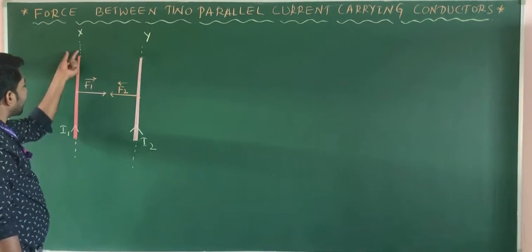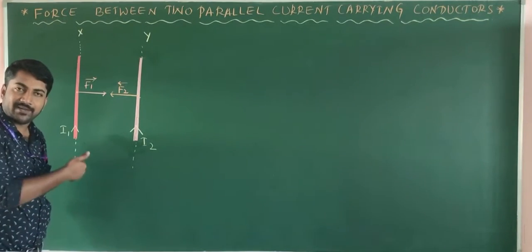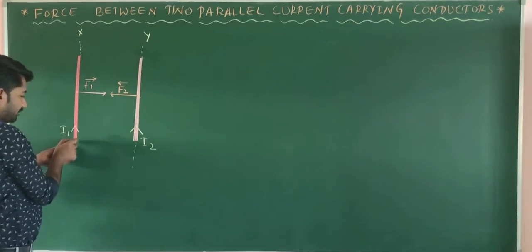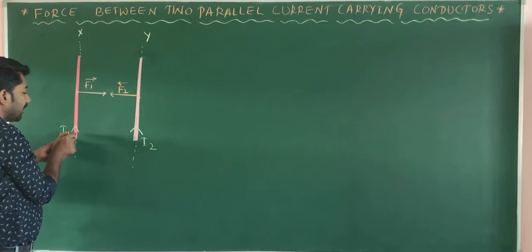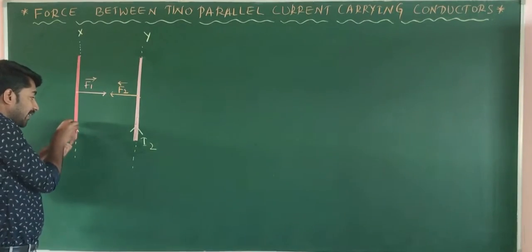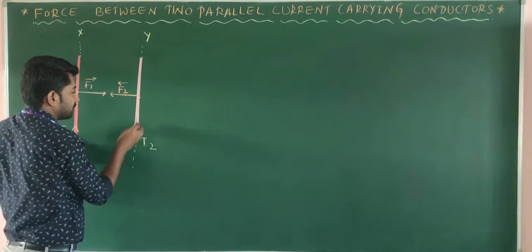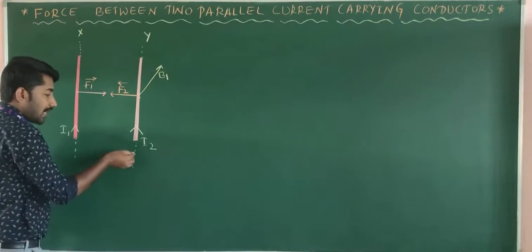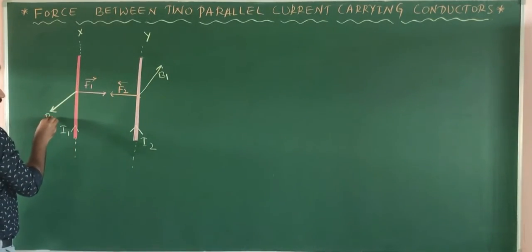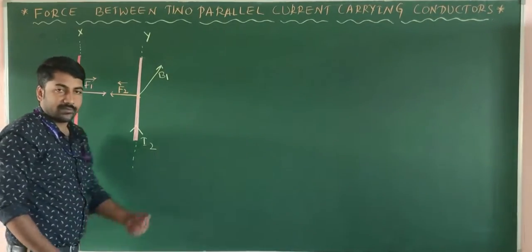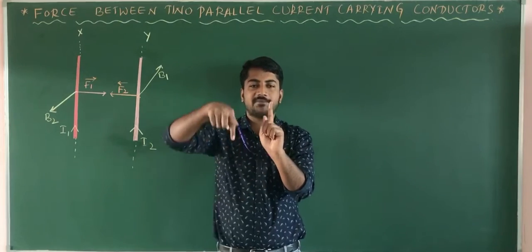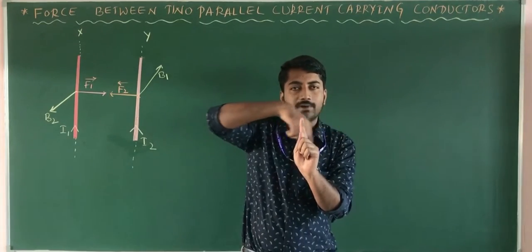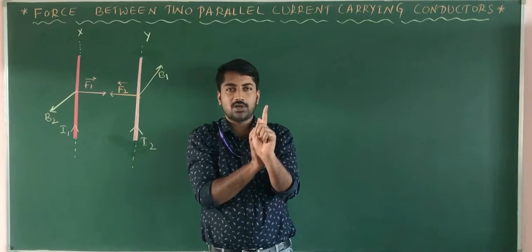According to the right-hand thumb rule, when the current flows in a straight conductor, the magnetic field is produced around it in the form of closed circular loops. The thumb indicates the direction of current and the other fingers indicate the direction of the magnetic field. Due to conductor X carrying current I1, the magnetic field B1 is produced in the region around conductor Y, forming circular rings around the conductor.